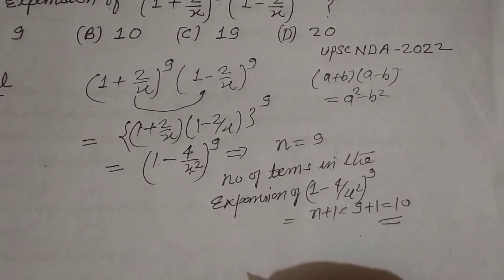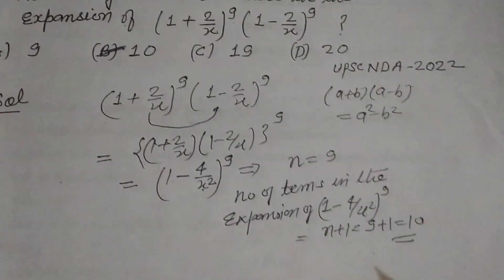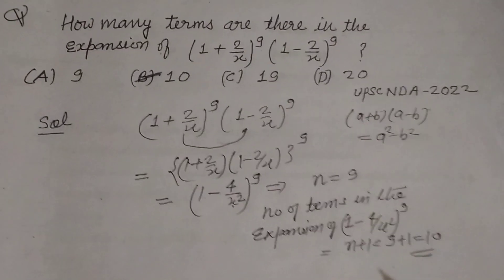So the number of terms in the expansion is 10, which is found in option B, therefore option B is correct for this question.